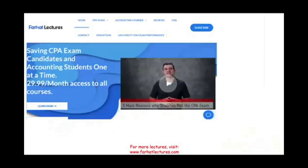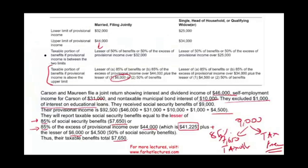On the CPA exam, they usually don't expect you to memorize these formulas, but you have to know that you could have zero taxable — none of it is taxable — or if you are in between you could have up to 50% taxable, and if they give you a large number, just think of it as 85% of their social security is taxable. So this is basically a shortcut.